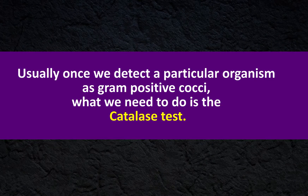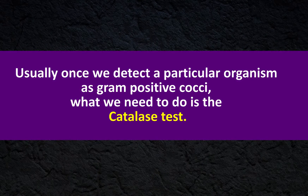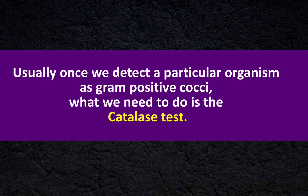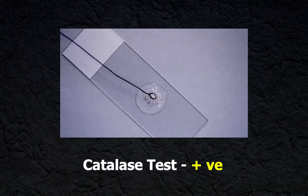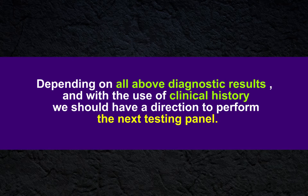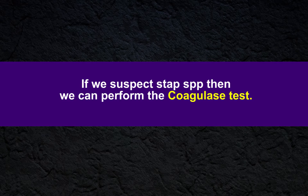Then we can prepare a Gram stain. Staphylococcus saprophyticus are Gram-positive cocci in clusters. Once we detect a particular organism as Gram-positive cocci, what we need to do is the catalase test. The catalase test is positive for Staphylococcus saprophyticus. Depending on all diagnostic results and with the use of clinical history, we should have a direction to perform the next testing panel.